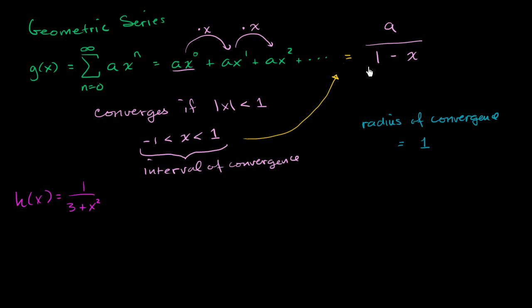The first thing you might notice is we have a 1 here instead of a 3, so let's try to factor out a 3. This equals 1 over 3 times (1 + x²/3).